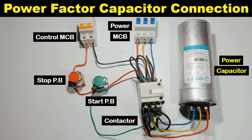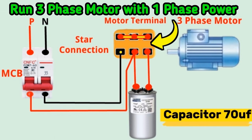Fixed capacitors are one of the primary types of power factor correction capacitors. As the name suggests, fixed capacitors have a predetermined capacitance value that remains constant. This value is chosen based on the specific requirements of the electrical system and load.